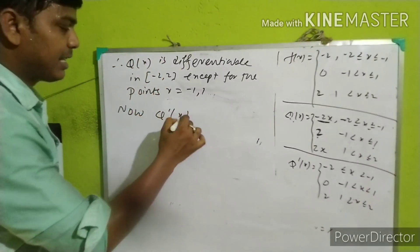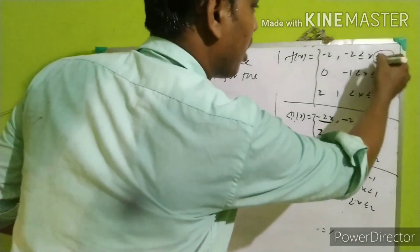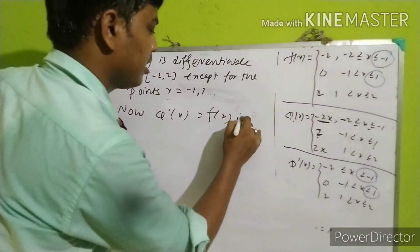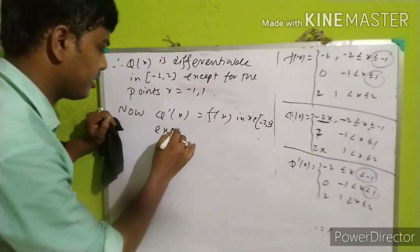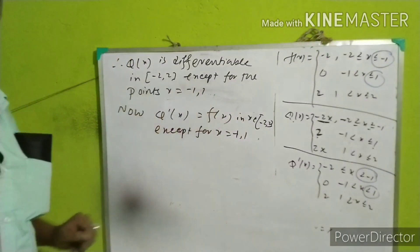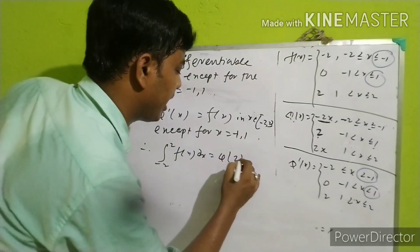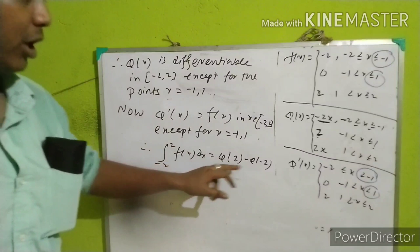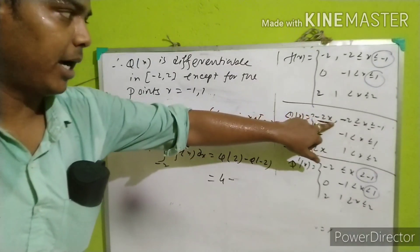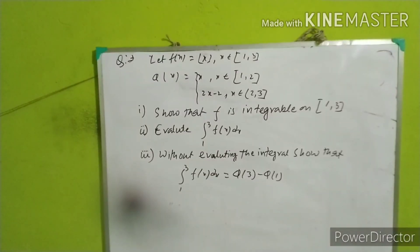Phi dash x equals f of x except for x equals minus 1 and x equals 1. Therefore the integral from minus 2 to 2 of f of x dx equals phi of 2 minus phi of minus 2. Phi of minus 2 equals 2, phi of 2 equals 2, so phi of 2 minus phi of minus 2 gives minus 4. So the answer to this problem is minus 4.